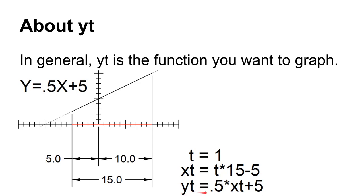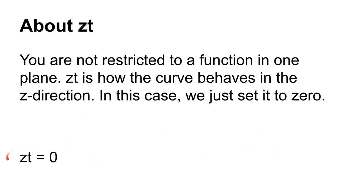NX solves yt as a function of xt, and you can see it starts at negative 5 because of how we structured xt — it has a definite starting point and ending point. Now zt in our case is going to equal 0, but you could set it equal to something like sin(xt) to get deviation in the z axis. For this class, just set zt equal to 0 so your function lies in a nice plane.